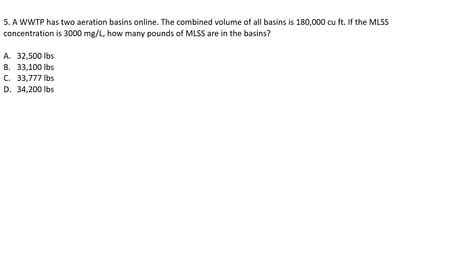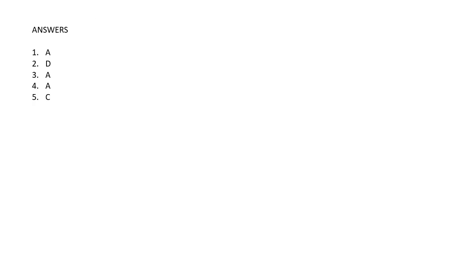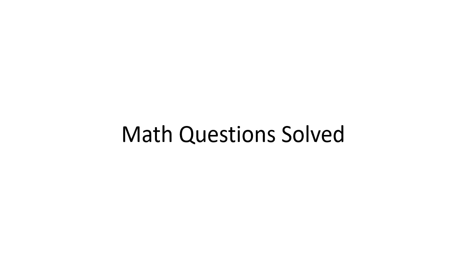Question five answer choices: A) 32,500 pounds, B) 33,100 pounds, C) 33,777 pounds, or D) 34,200 pounds. Now the correct answers — if I did the math properly, hopefully I did: Question 1: A, Question 2: D, Question 3: A, Question 4: A, and Question 5: C. Alright, welcome to the part of the video where we solve the math questions step by step. Let's get to it.